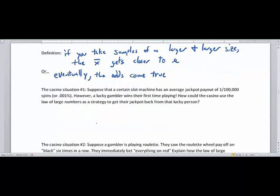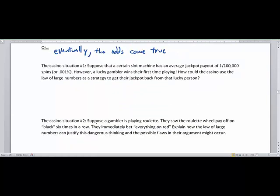Suppose that a certain slot machine has an average jackpot payout of one every one hundred thousand spins or 0.01%, so very unlikely. However, a lucky gambler wins their first time playing. How could the casino use the law of large numbers as a strategy to get their jackpot back from that lucky person?